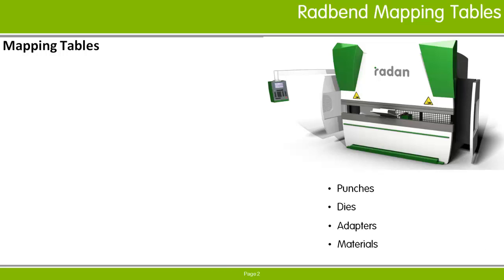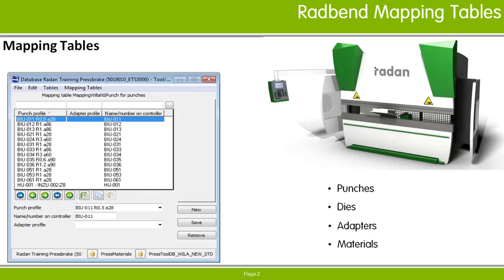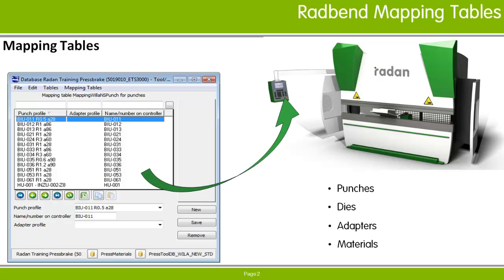Radband mapping tables provide the ability to match the definitions of tools and materials to the same definitions on the Pressbrake controller. Mapping is required for any defined tool profiles or materials within Radband in order to generate machine code from Radband that will run on the Pressbrake. Adding tool profiles and materials, and mapping them to the Pressbrake controller, is done through the tool and material database editor.